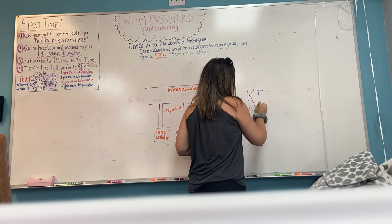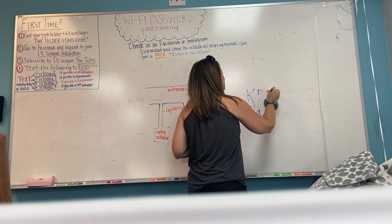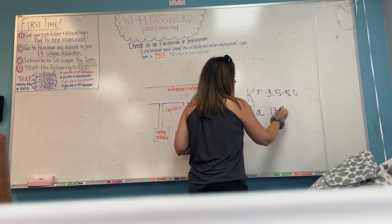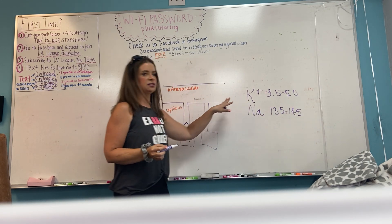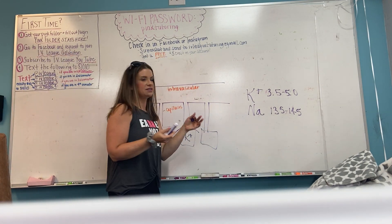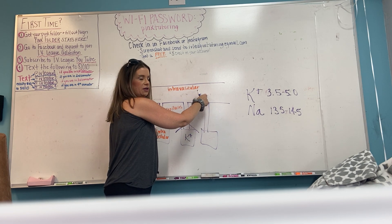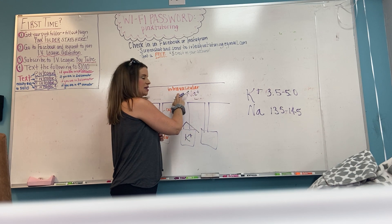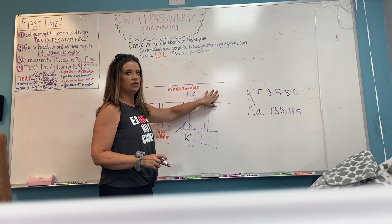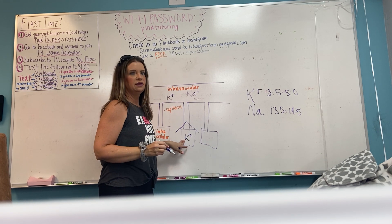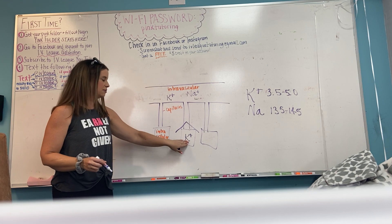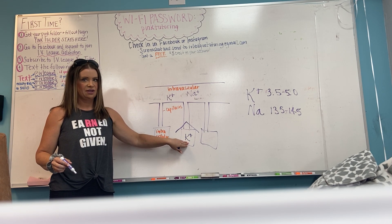Normal potassium value is 3.5 to 5, and normal sodium is 135 to 145. Does that mean there's more sodium in the body than potassium? No. When we draw a serum level of electrolytes, we're drawing from the blood supply. The predominant electrolyte intravascularly is sodium — that's where it likes to live. Potassium likes to live in the cells. So when I draw a serum level, it's going to look like you have way more sodium than potassium, but that's not true — potassium just lives inside the cell and we won't see as much of it.